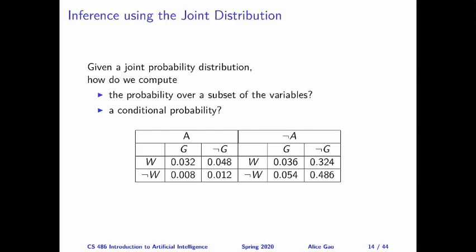Let's consider our home scenario, and let's simplify the scenario a bit so we're only considering three random variables. The first one is whether the alarm is going off. The second one is whether Dr. Watson is calling. And the third one is whether Mrs. Gibbon is calling. So we're ignoring all the other variables. In this table, I am representing a joint distribution over these three variables.